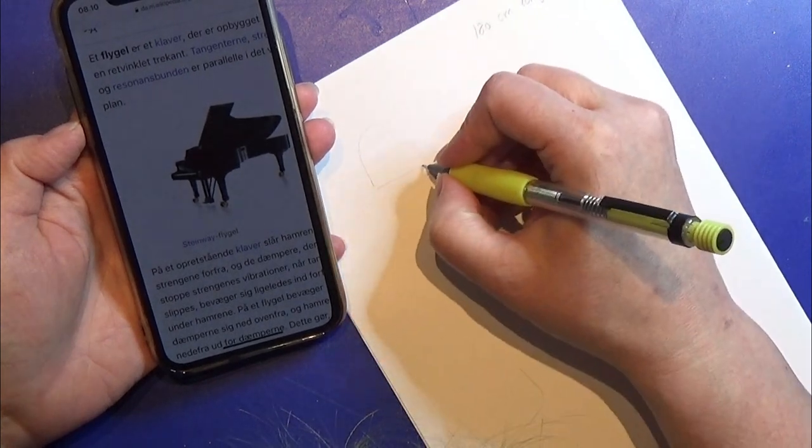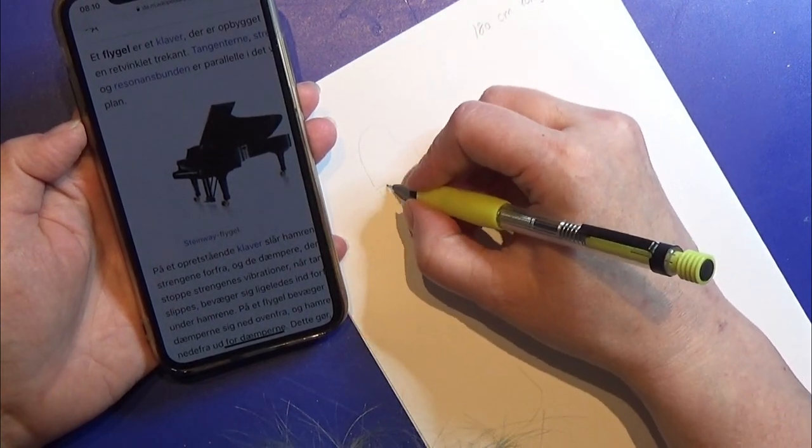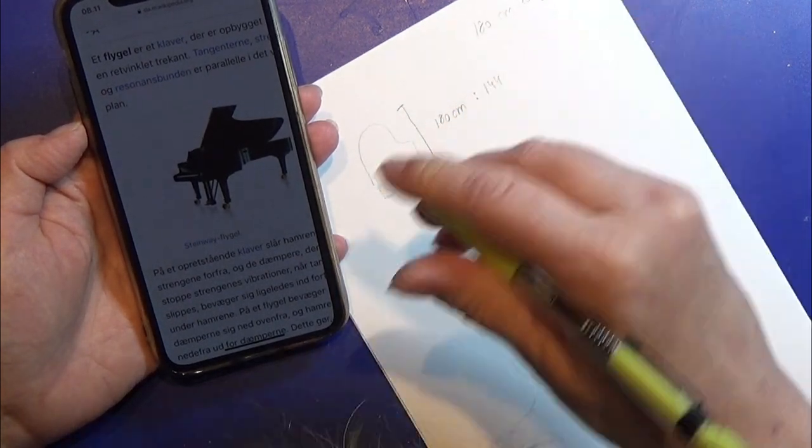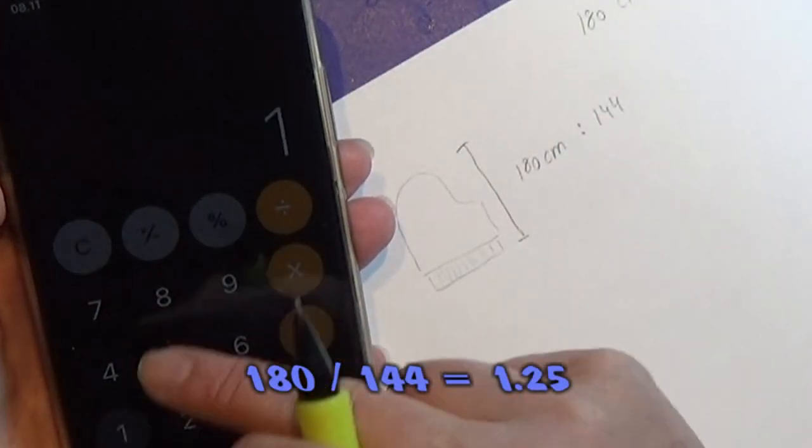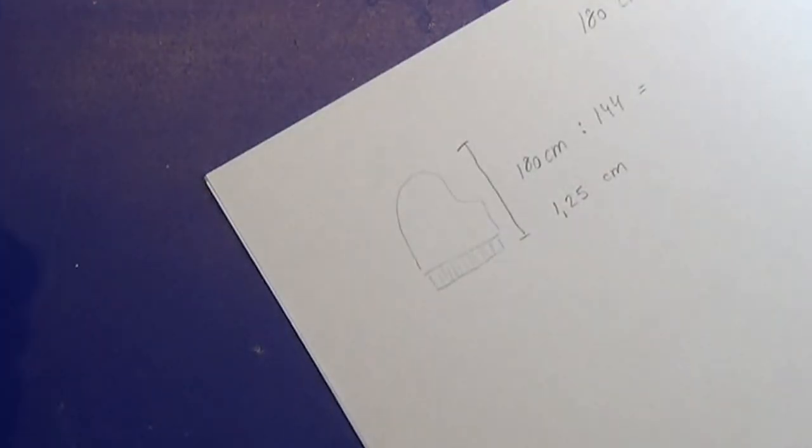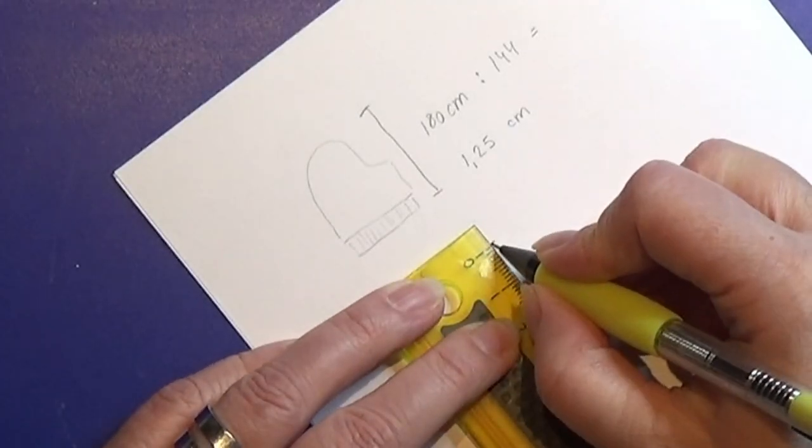I found the length of this piano. I'm dividing that with the 144 and now I have the length for this miniature piano. And I'm going to draw it down so I have the shape that I want.